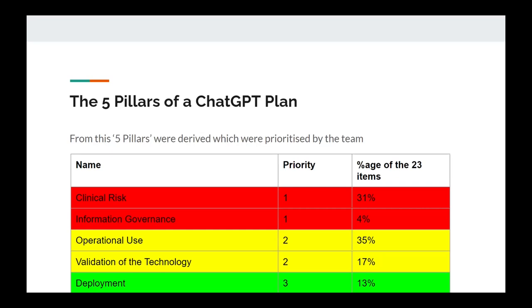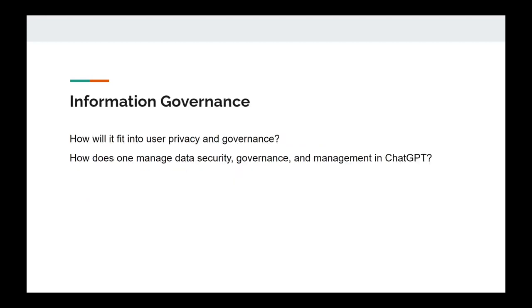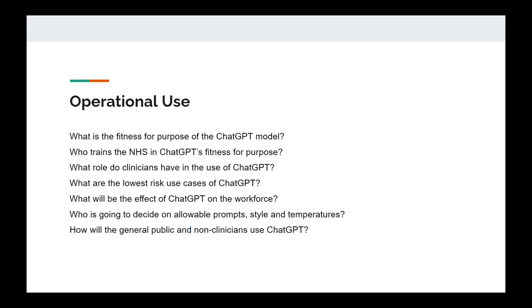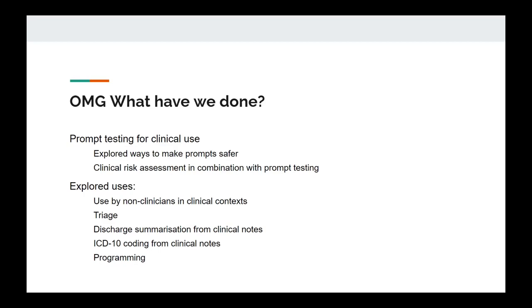Operational use considerations — how does it affect the workforce? Validation of the technology — how much do we know about it? Suitability? And then the lowest-ranked pillar was deployment, and the reason for that is it's already in the NHS, which is probably the scariest thing about it. We looked at clinical risk, information governance, validation of the technology, and deployment. We will try to get these materials to people, as things were flying by and there's much you'd like to add.